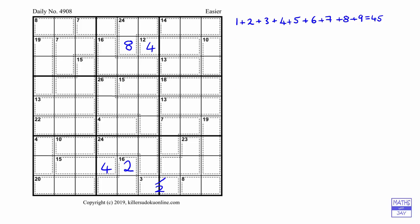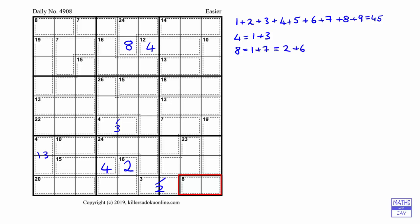We've already seen that a cage totalling 3 can only be 1 and 2. Moving up, 4 can only be 1 plus 3, since you can never repeat numbers in a cage. We've got a couple of 4-cages, so those must each contain 1 and 3. Looking at the 8-cage in the bottom right corner, it could be 1 and 7, or 2 and 6, or 3 and 5. But since we already know the 3-cage in that row contains 1 and 2, that eliminates both 1 and 7 and 2 and 6 — so the 8-cage must be 3 and 5.